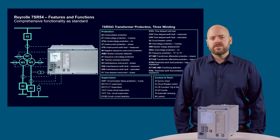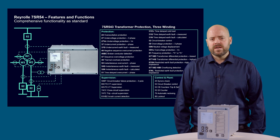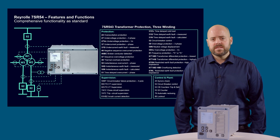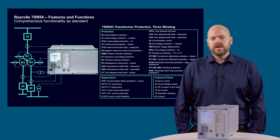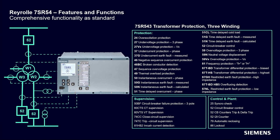The Rearroll 7SR543 three-winding device provides comprehensive protection for three-winding transformers. The device also provides differential protection for auto-transformers. Its 12 CT inputs are suitable for connection to both 1A and 5A current transformer secondary windings and includes a core range of functions as standard. Additional 4 VT inputs are also optionally available.